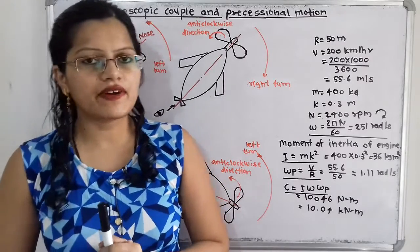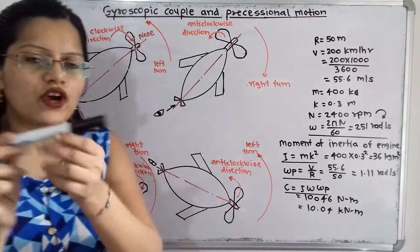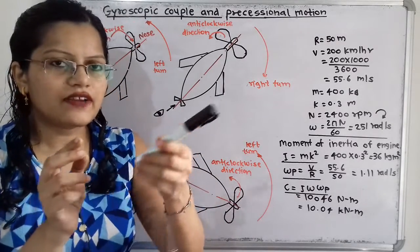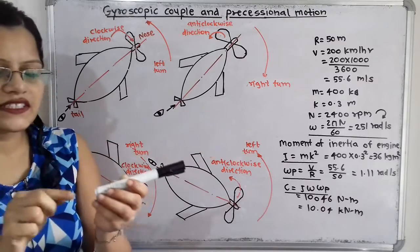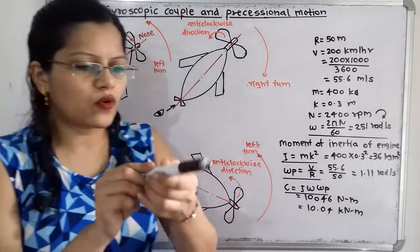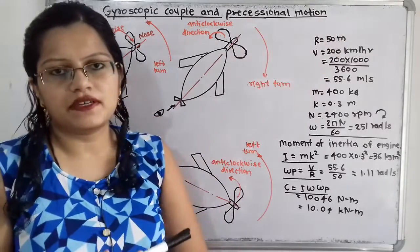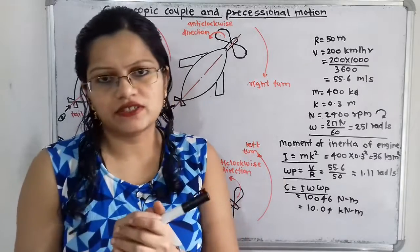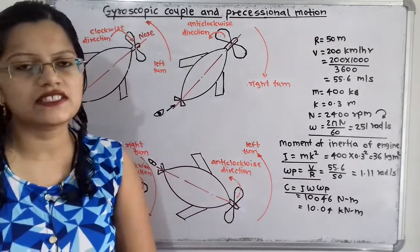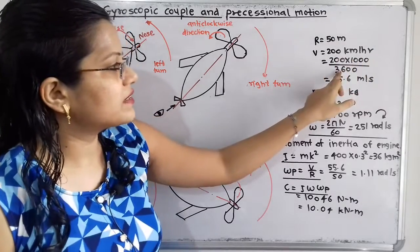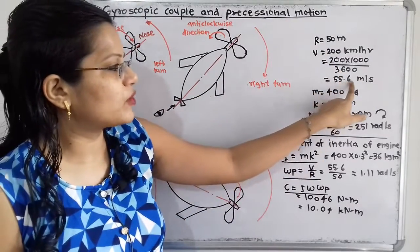We will first understand the given data. The radius of curvature when the aeroplane is taking a turn is given as R = 50 metres. The aeroplane is moving with a velocity of 200 km per hour. We have to convert it into metres per second: 200 × 1000 ÷ 3600, which is equal to 55.6 metres per second.